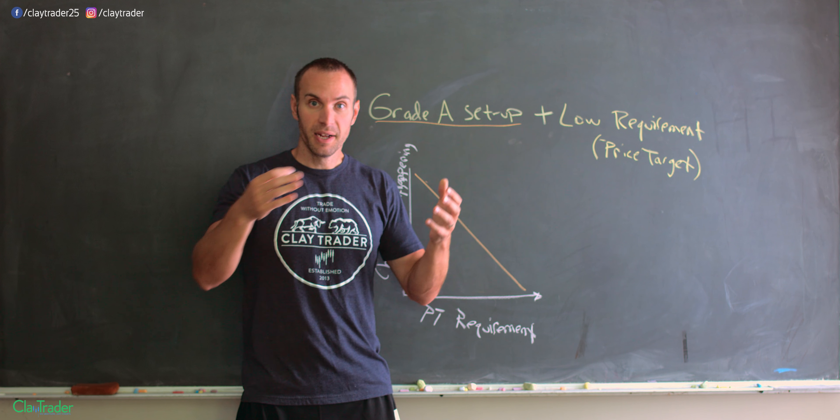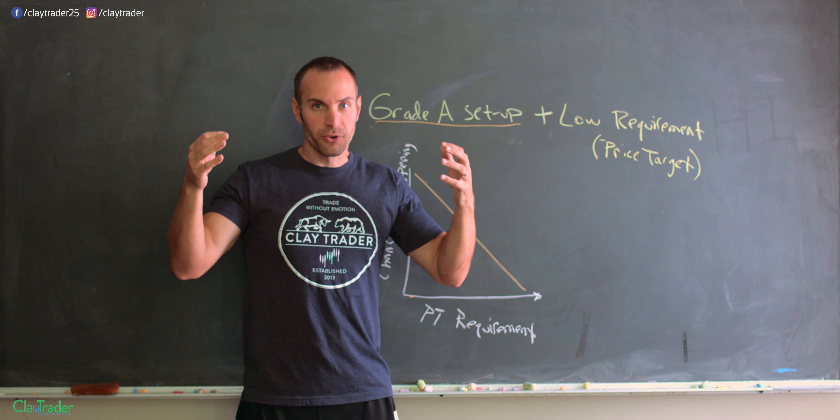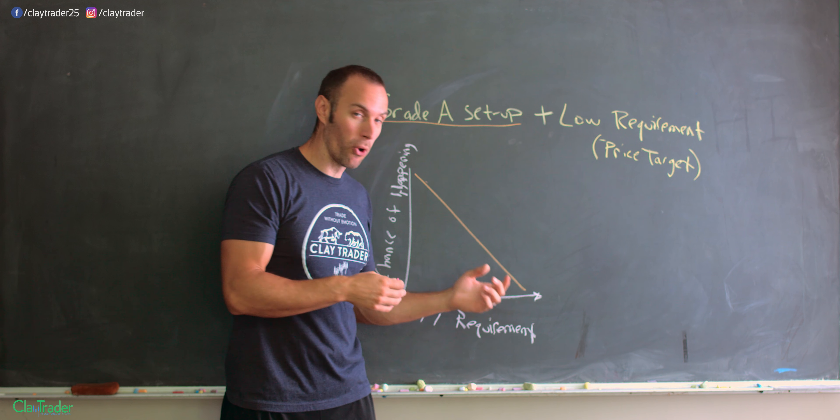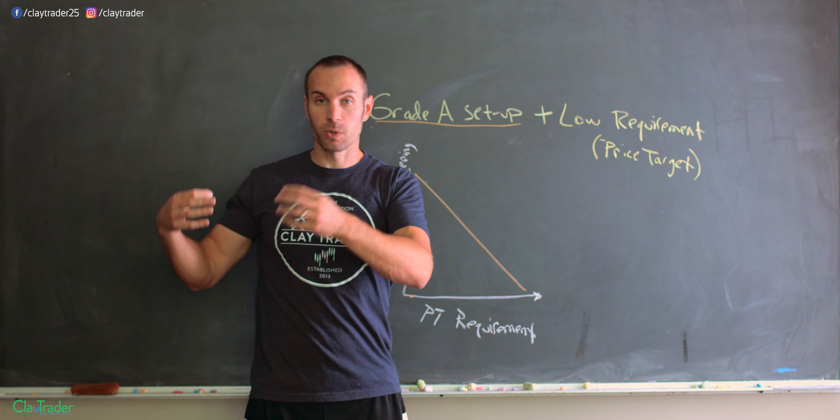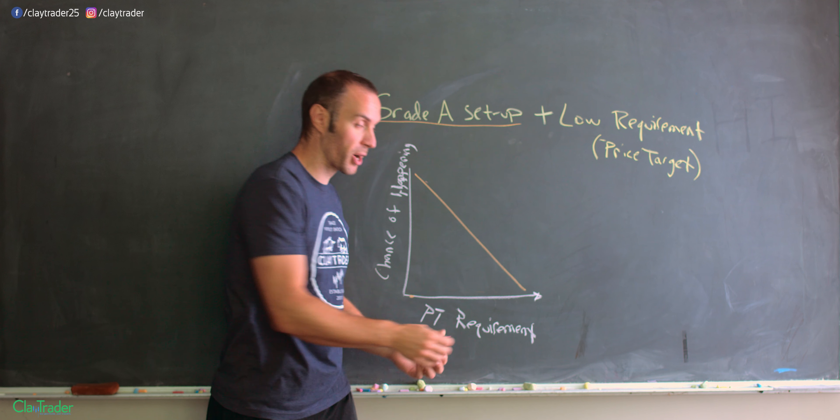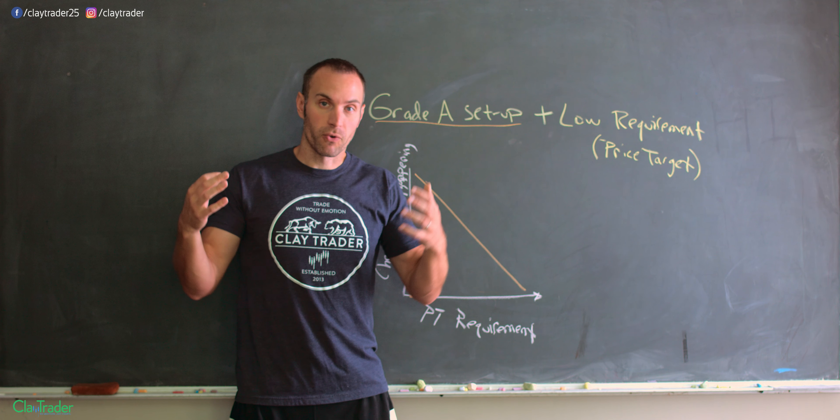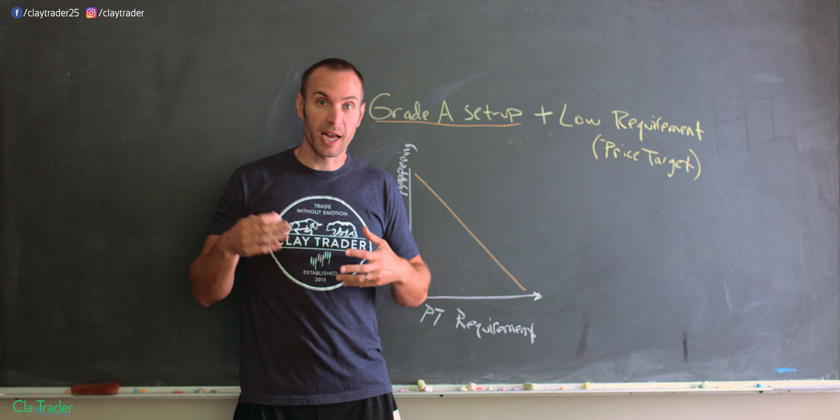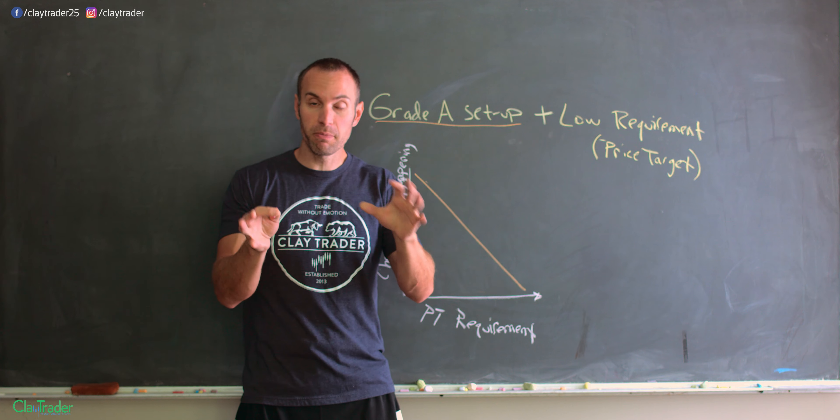In hindsight I could have gotten more, but there are also situations where had you wanted more, maybe it's a fake breakout that rolls right back over, and then you're sitting there saying now it's a losing trade because my price target requirement was too big. In this situation it didn't work out that way. Coulda, shoulda, woulda, right?